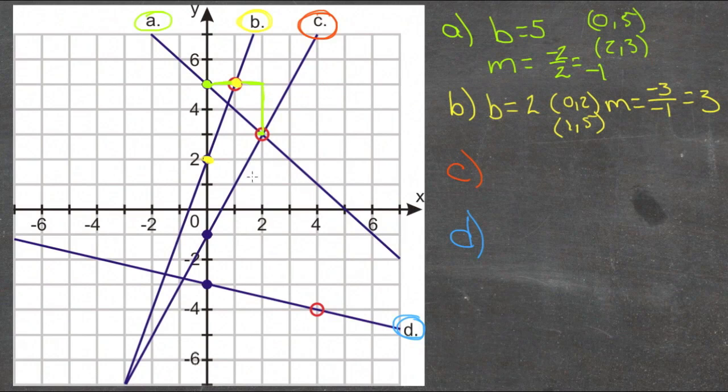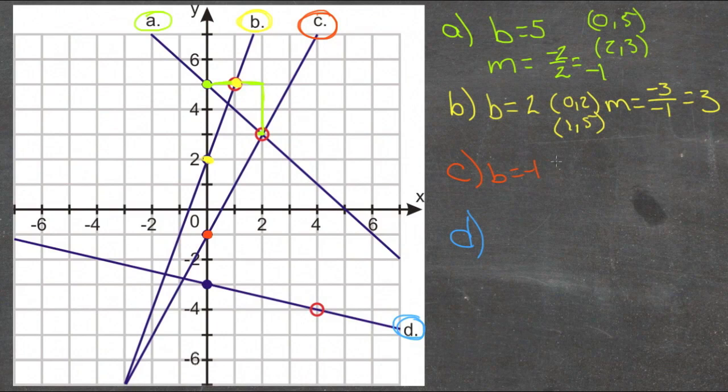Let's take a look at C. Our y-intercept is down here this time. So we have negative 1. So our b is negative 1. And the coordinate is (0,-1). And then we have another point marked up here. And this one is (2,3). So we have a point at (2,3).